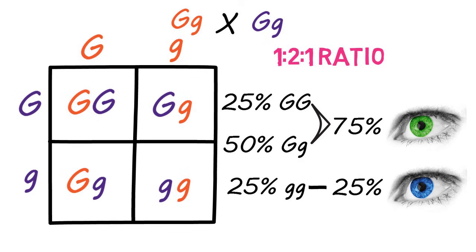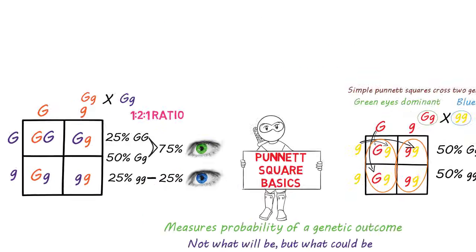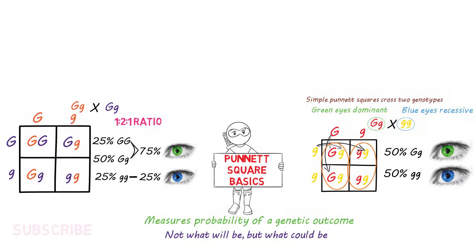Hopefully that helps you understand simple Punnett squares a little better. Genetic crosses can be much more complicated, and I'll make a video in the future explaining how to tackle those more complicated genetic crosses. If you have any questions from this video, throw them in the comments. Don't forget to like and subscribe — thanks for watching, I'll catch you next time.